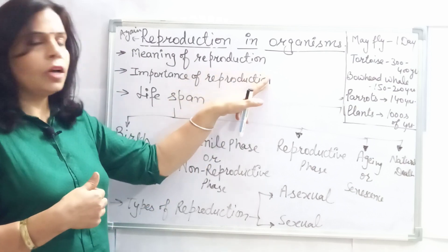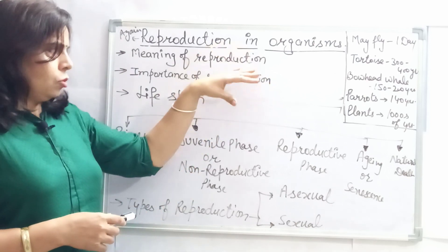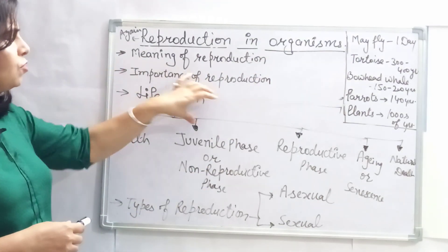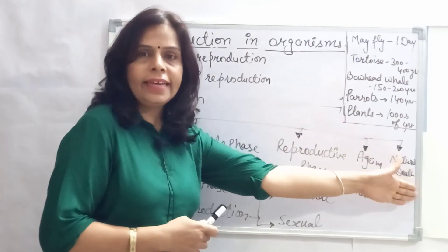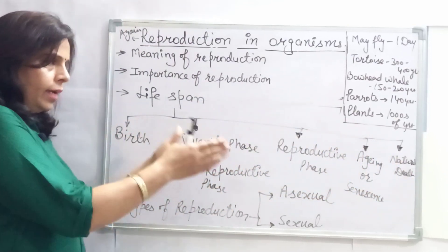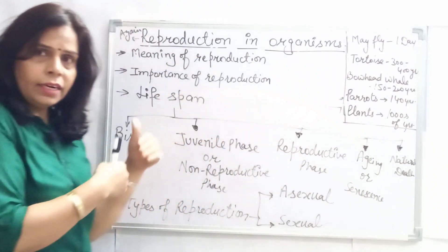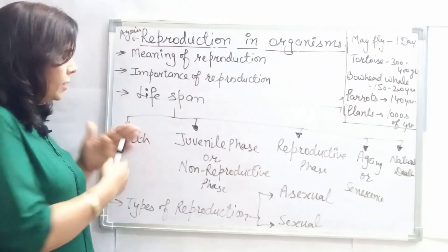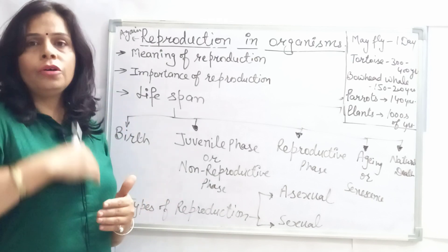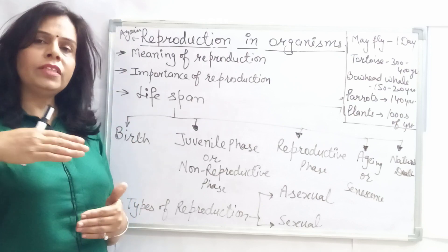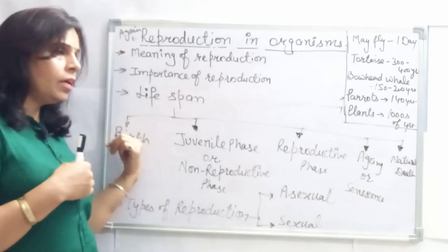Before starting in detail, let us understand what lifespan is. Lifespan means the duration between birth and death. After birth, a living organism undergoes many phases — it will grow, it will mature, then it will start declining, and after that it undergoes death. All these phases together constitute the lifespan.